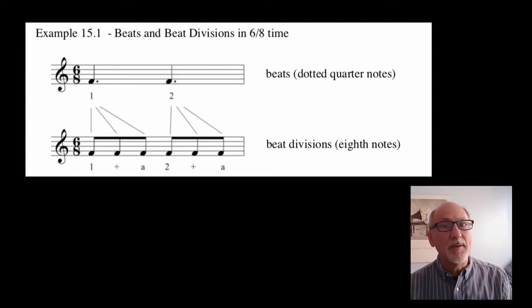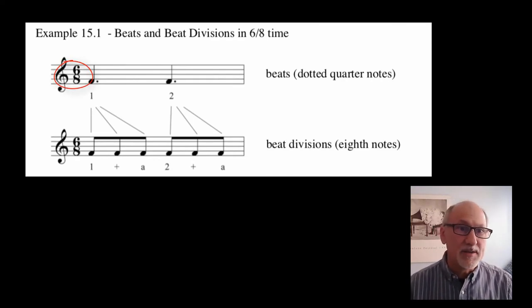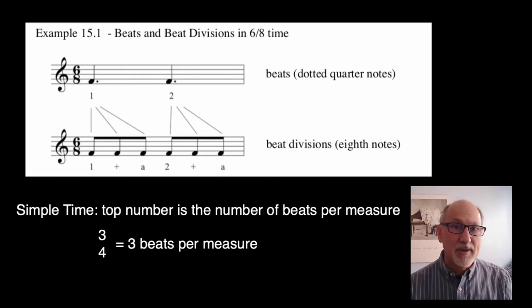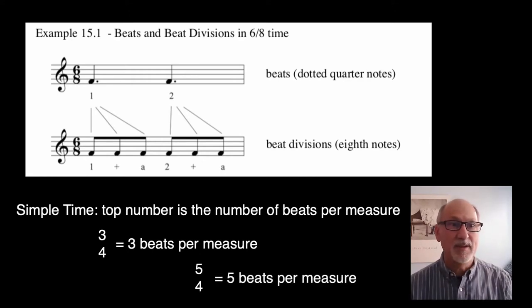The trickiest aspect of compound time is interpreting the time signature. You will recall that in simple time, the top note of the time signature signifies the number of beats per measure. For example, 3-4 meter has 3 beats per measure, and 5-4 meter has 5 beats per measure.